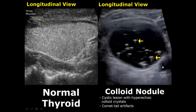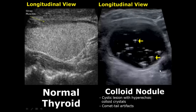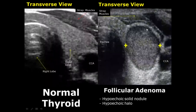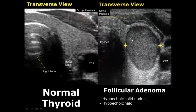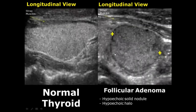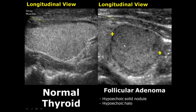Such cystic appearances or appearances with internal septations are usually benign. A follicular adenoma is a hypoechoic mass. Here it is more hypoechoic as compared to the thyroid tissue. The halo is even more hypoechoic, appearing darker. This type of appearance can be malignant. Here is a longitudinal view showing follicular adenoma — a hypoechoic mass with a hypoechoic halo.